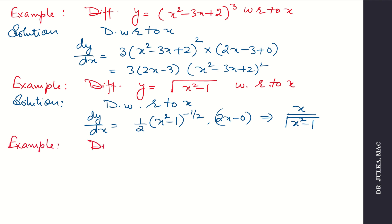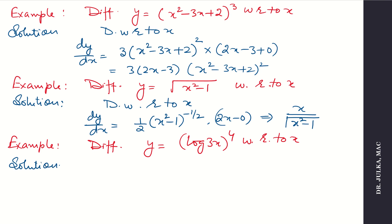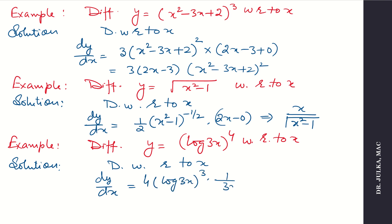One more example: y equals (log 3x) to the power 4. Here power is 4, function is log 3x, and the angle is 3x. Differentiating with respect to x: derivative of y is 4 times (log 3x) to the power 3, multiplied by derivative of log 3x which is 1 upon 3x, multiplied by derivative of 3x which is 3. So the answer is 4 divided by x times (log 3x) to the power 3.